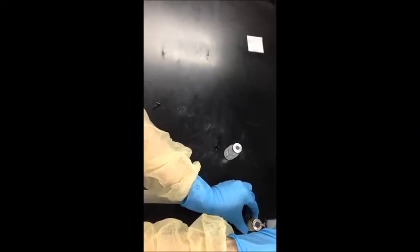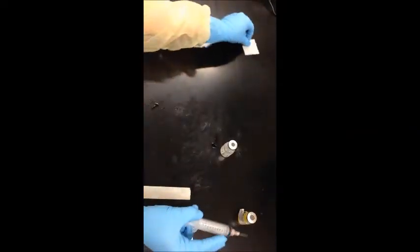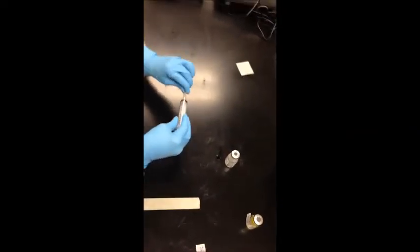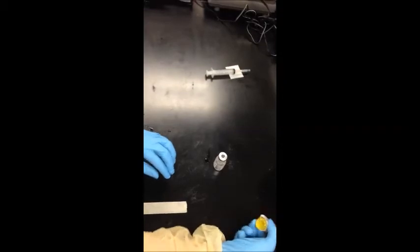Remove syringe and place on alcohol pad making sure the needle tip is facing towards first air. Invert medication vial back and forth until the powder has been dissolved. This may take a few minutes.